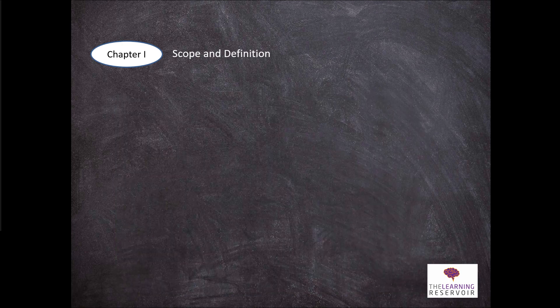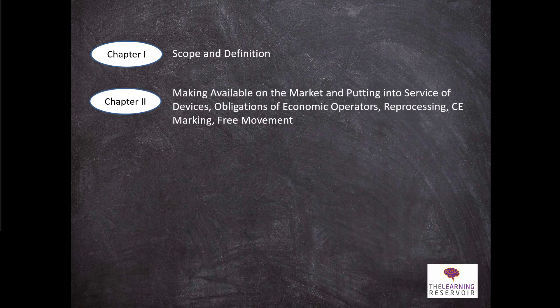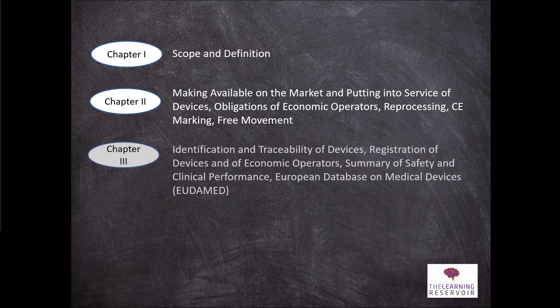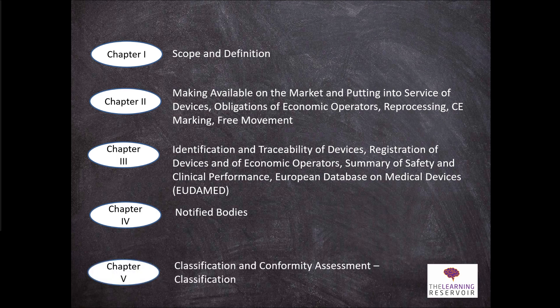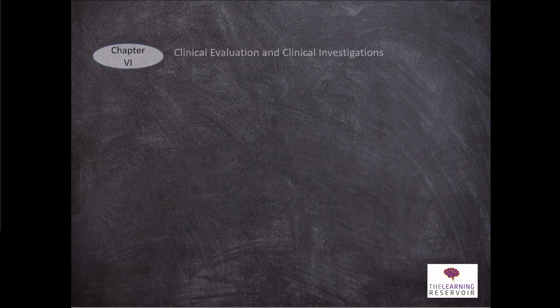Chapter 2 covers the making available on the market and putting into service of devices, obligations for economic operators, reprocessing, CE marking, and free movement. Chapter 3 covers identification and traceability of devices, registration of devices and economic operators, summary of safety and clinical performance, the European database on medical devices, and EUDAMED. Chapter 4 covers notified bodies, and chapter 5 covers classification and conformity assessments.